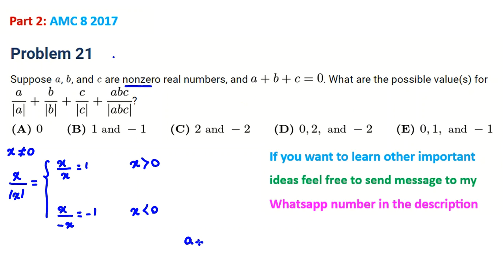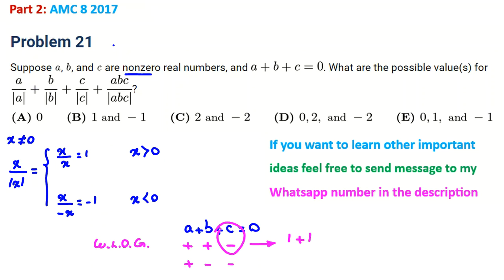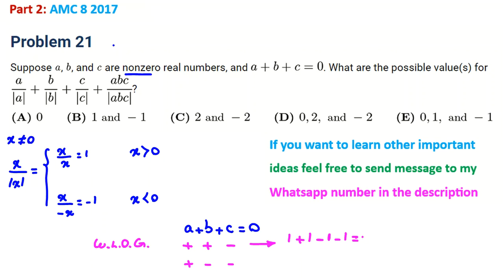Since a + b + c = 0 and all are non-zero, we must have both positive and negative values among them. Without loss of generality, the cases are: two positives and one negative, or one positive and two negatives. Case 1 — two positives, one negative: a/|a| + b/|b| + c/|c| = 1 + 1 − 1 = 1, and abc/|abc| = −1, giving 1 + 1 + 1 − 1 − 1 = 1. Wait — the total sum is 1 + 1 + (−1) + (−1) = 0.